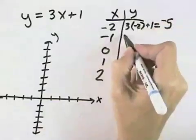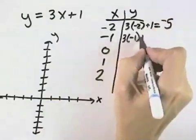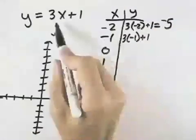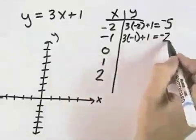Then with negative 1, we'd have 3 times negative 1 plus 1, again substituting negative 1 in for x. Negative 3 plus 1 is negative 2.